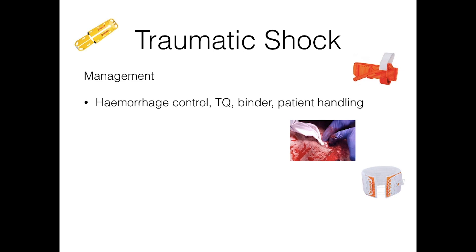How do we manage traumatic shock? Haemorrhage control is the first priority — with direct pressure, elevation, and application of haemostatic agents such as Celox. Early tourniquet application for exsanguinating extremity haemorrhage, and pelvic binder application for patients with potential pelvic injury and clinical signs of traumatic shock. Also, careful patient handling is critical: minimal movement, avoiding full log rolls, and using a scoop for transfers — being careful not to disrupt early clot formation.